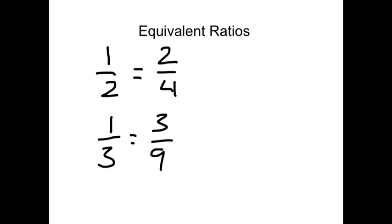Equivalent ratios are a lot like equivalent fractions, so we're familiar with one half being equal to two out of four. One third is the same as three ninths, and we know they're equal because if we multiply the numerator and the denominator by the same number, we get an equivalent fraction.